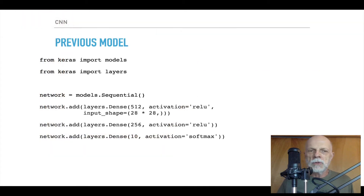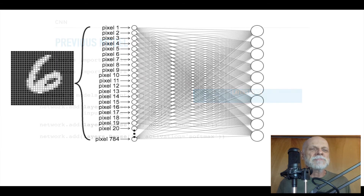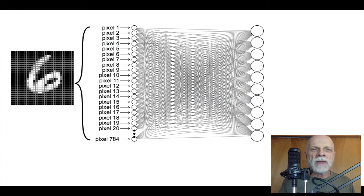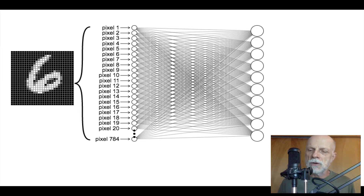Previously, we've been looking at models that look like this, where we have layer after layer of dense neural networks. By dense, we meant that everything in one layer was connected to everything in the next layer. In our previous example, we had a 28 by 28 image — that's 784 pixels — and each of those pixels was connected to each node of the next layer, those 512 nodes. That's densely connected, or a dense layer.